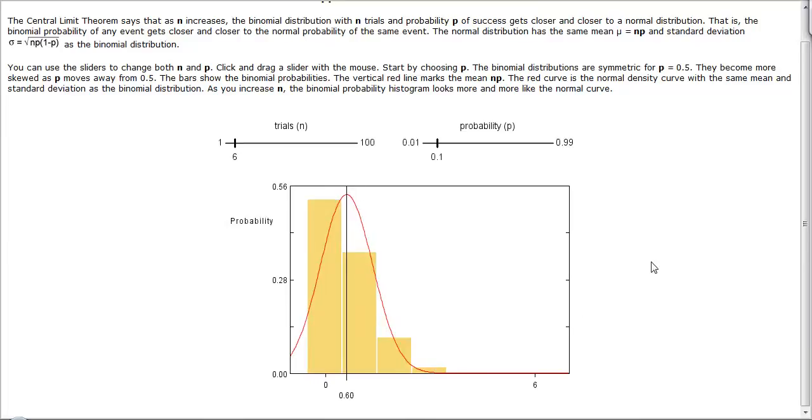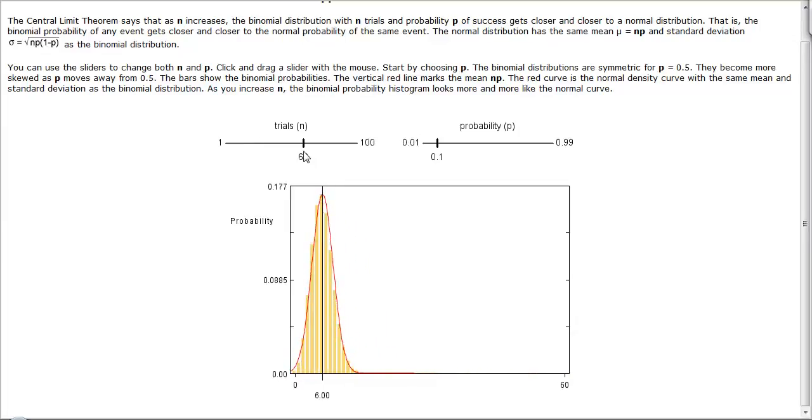This is an extreme situation where we can see that the normal density is not doing a very good job of fitting the histogram. This is because the number of trials is very low. If we increase the number of trials, we see that the shape of the histogram and the shape of the normal density begin to coincide.